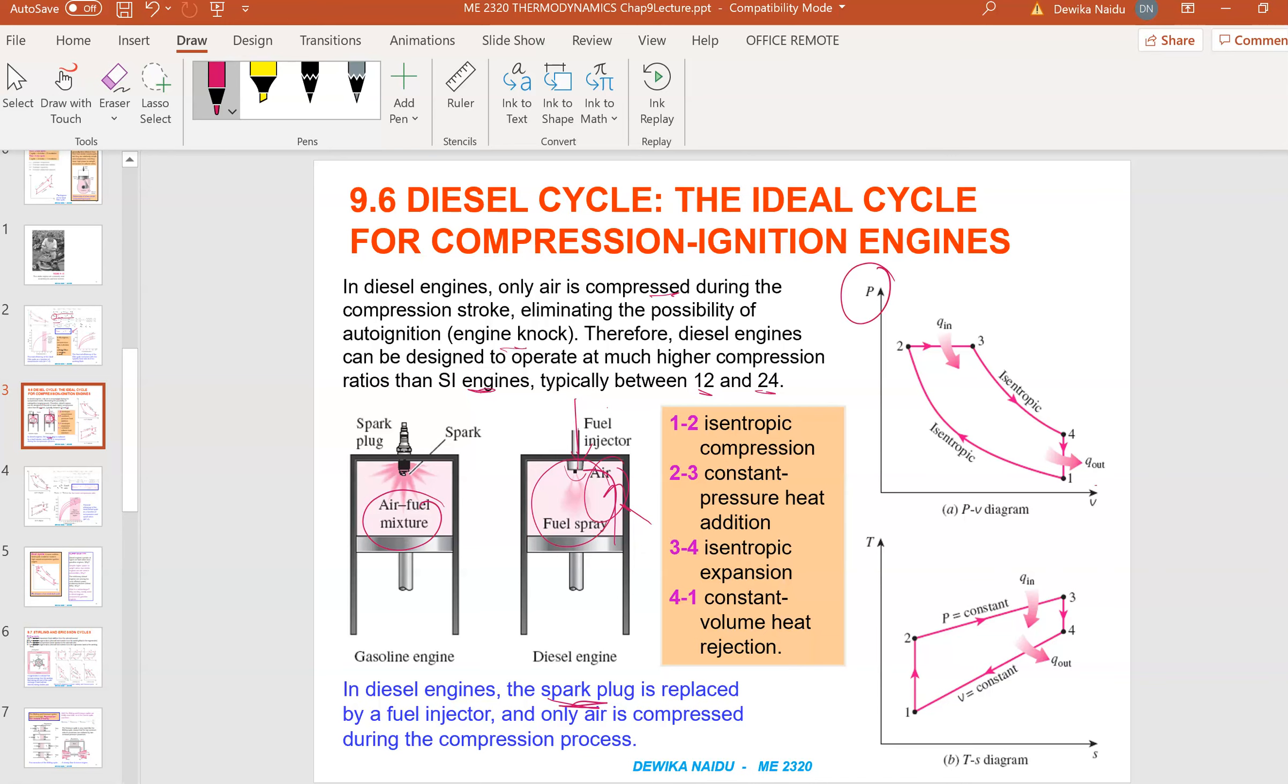For the PV graph and for the TS graph, this is how it looks. 1 to 2 is isentropic compression, then we have 2 to 3 constant pressure heat addition, then we have 3 to 4 isentropic expansion, and 4 to 1 constant volume heat rejection. We have this isentropic line going down 3 to 4 and then 1 to 2 is also isentropic. The pressure is constant here and the volume is constant here.